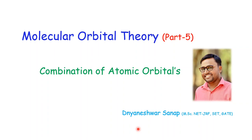Before we start the actual topic, let us recapitulate what we learned in the last video lecture. In the last video lecture, we learned about the rules for the linear combination of atomic orbitals, i.e. the LCAO principle. Second, different types of representation for molecular orbital formation. And third, the comparison between bonding molecular orbital and antibonding molecular orbital.